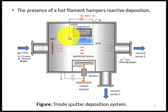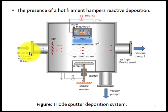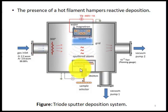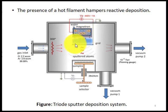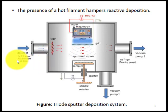In the triode sputtering diagram, you can see two vacuum pumps and a gas inlet where the sputtering gas is introduced. The substrate or sample material serves as the anode, and the target material is the cathode. A grid is present between the target and the sample. Electrons move from target to substrate and during their movement they strike the sputtering gas argon and ionize it. This grid controls the movement of electrons, causing them to move with increased speed and ionize more argon atoms.